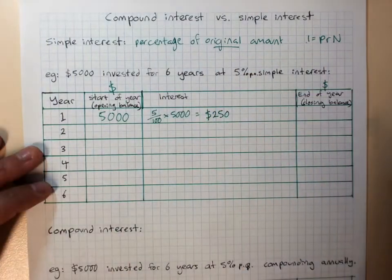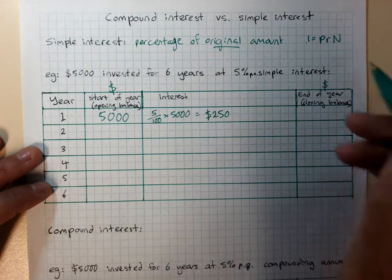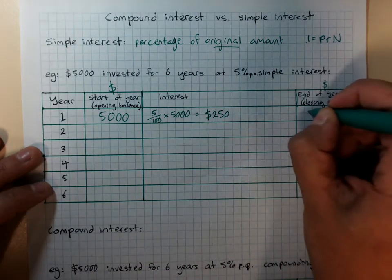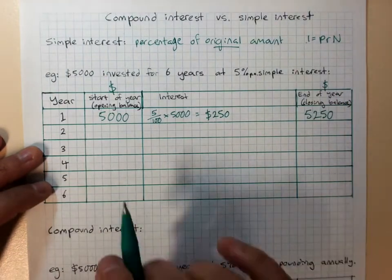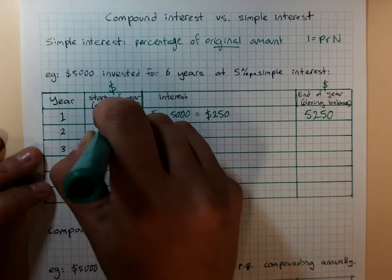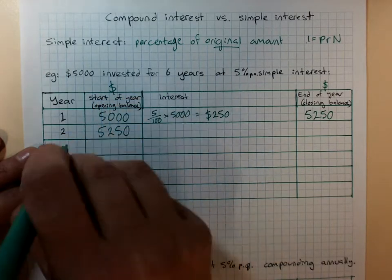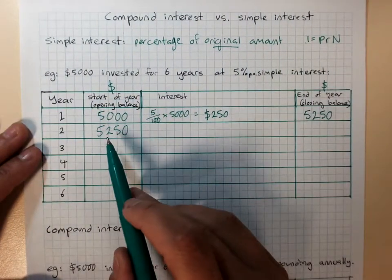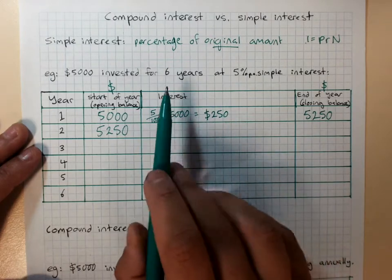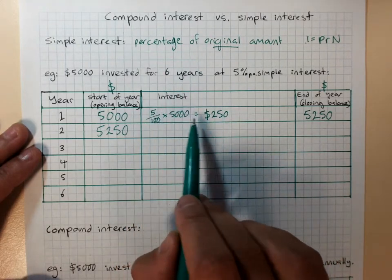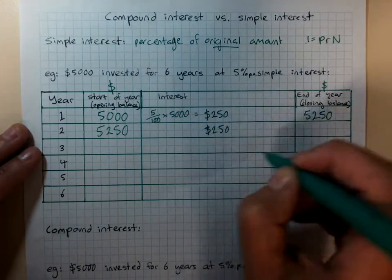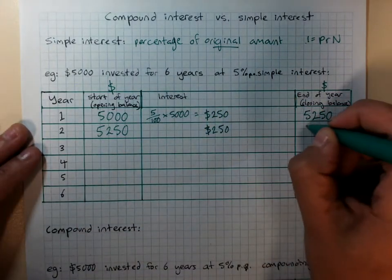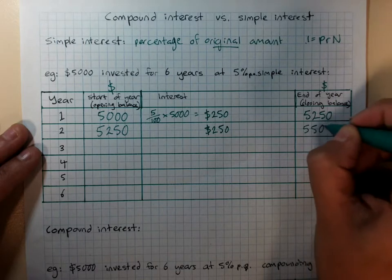And so, at the end of the year, I'd have $5,000 plus $250. But in simple interest, next year, at the start of the year, there's $5,250 in my account, but I still only earn 5% of the original starting balance, $250. So at the end of the second year, there's $5,500 in my account.